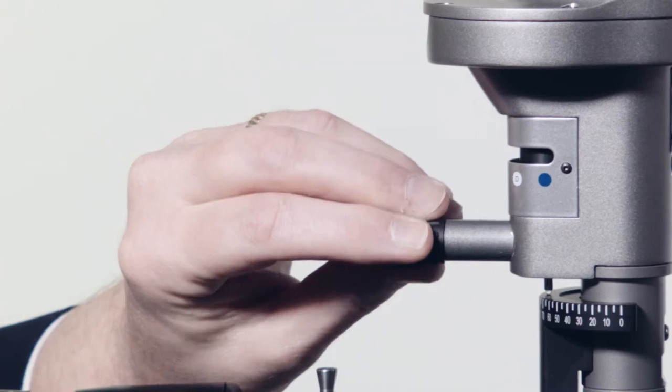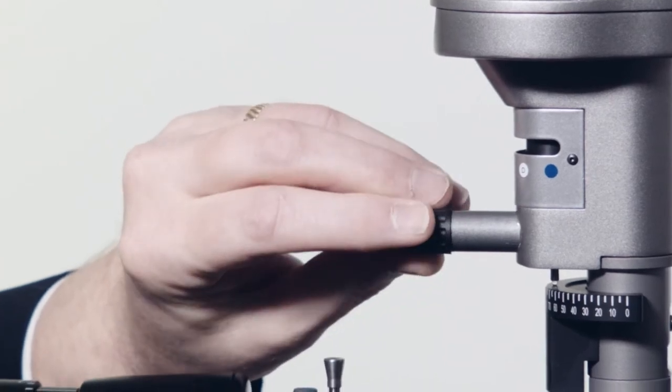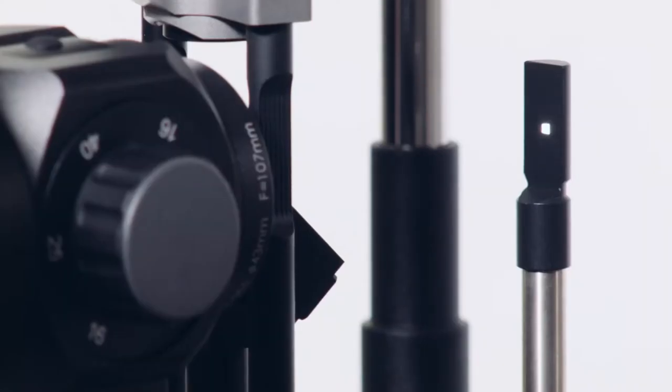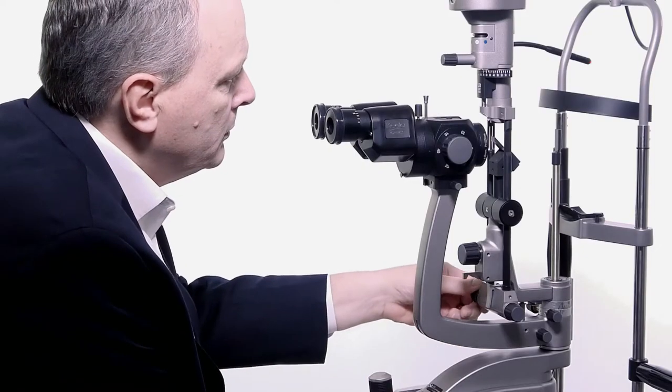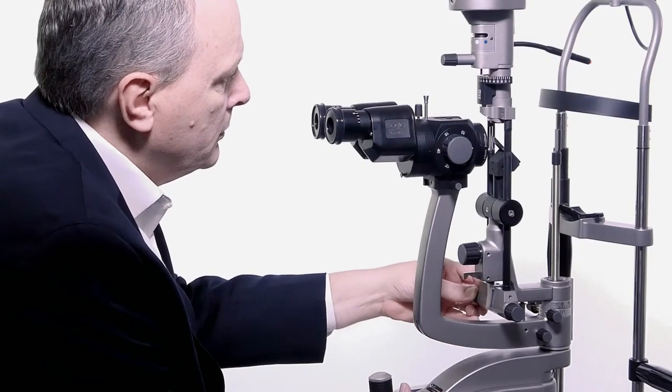Aperture can also be adjusted here. An exclusive 1mm square aperture can be used for uveitis assessment. Slit angle can be adjusted as required to perform the examination.